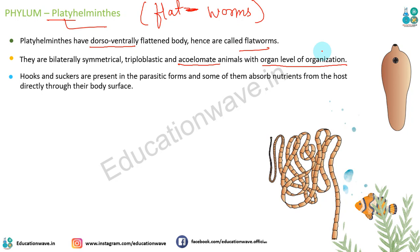Is series mein humne padha hai: sabse pehle cell level organization waale sponges, uske baad Cnidaria jaise tissue level of organization waale, aur ab Platyhelminthes aur Aschelminthes jitne bhi hain woh organ level of organization ke hain. Aise serial wise padhenge toh easily yaad ho jayega.